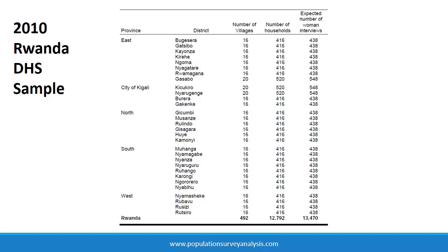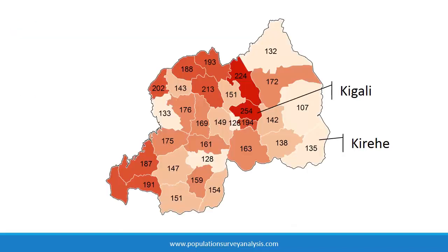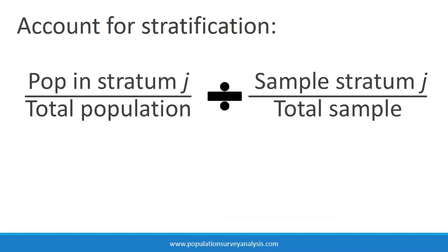Let us think about the impact of stratification through an example. We are going to select a stratified sample in Rwanda, stratified by Rwanda's 30 districts. Here are the total 2010 population figures in thousands, where dark colors represent larger populations. Kigali District has nearly twice the population as Korehe. So if we sample the same number of people from each district, people from Korehe would be overrepresented in the national sample, and people from Kigali would be underrepresented. We account for stratification by weighing observations in a given district by the ratio of proportion of district population represented in the sample versus the underlying population.